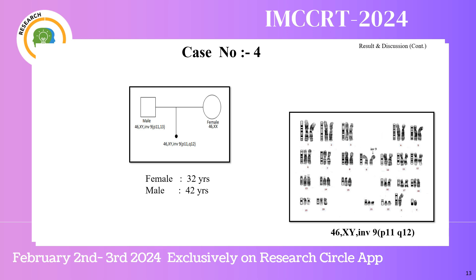In another case, inversion Chromosome 9 was found in a PoC sample. When parental karyotyping was done, pericentric inversion in the region P11Q13 of Chromosome 9 was found in the father's karyotype. There is a possibility that some genes are affected by such inversion, leading to spontaneous abortion.